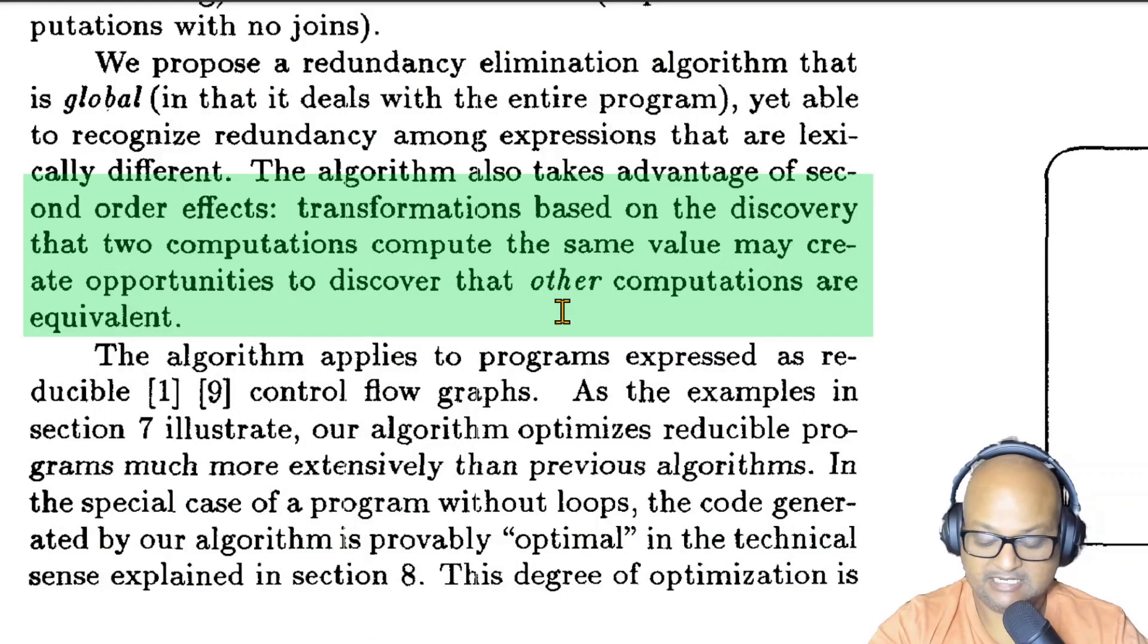And the interesting thing is that like many compiler optimizations there is a ripple on effect which happens once you identify that two expressions compute the same value. Once you optimize one of those away, you can then discover other computations that are equivalent.